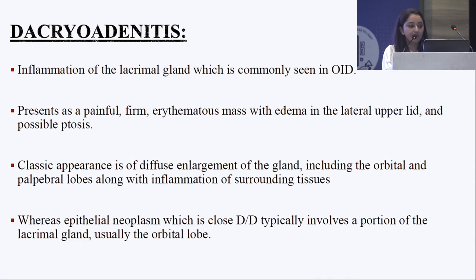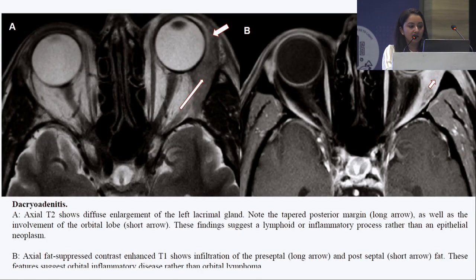Dacryoadenitis presents as a painful firm lacrimal gland mass in the lateral upper lid and there may be proptosis. There is diffuse enlargement of the gland which might include both the orbital and palpebral lobe along with inflammation of surrounding tissues. On T2 MRI, we see diffuse enlargement of the lacrimal gland.